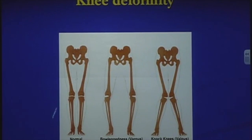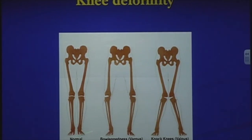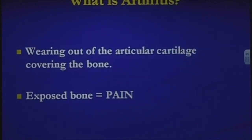Regarding knee deformity, the skeleton on the left shows normal alignment. As someone begins to wear out the medial compartment of the knee, they become more bow-legged. If a person wears out the lateral side of the knee, they become more knock-kneed. These diagrams show what those alignment changes look like.